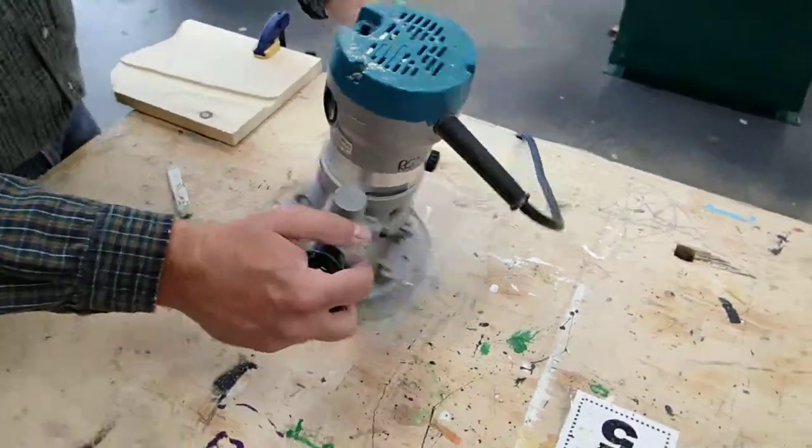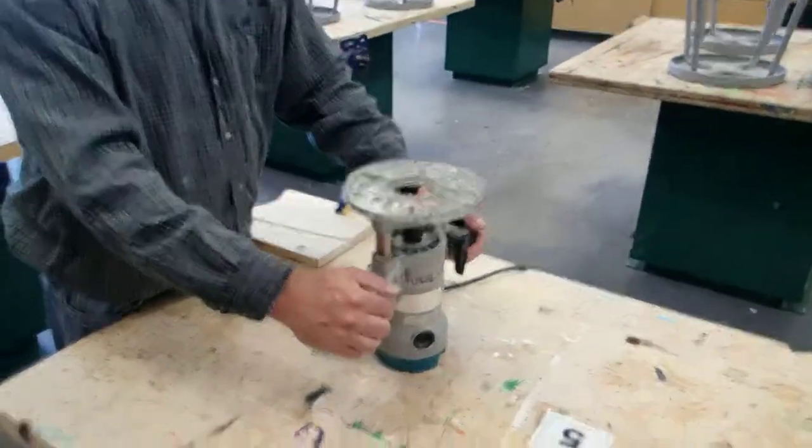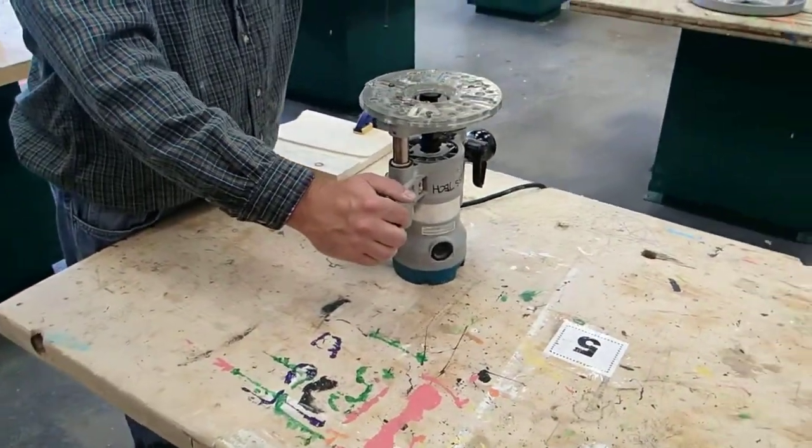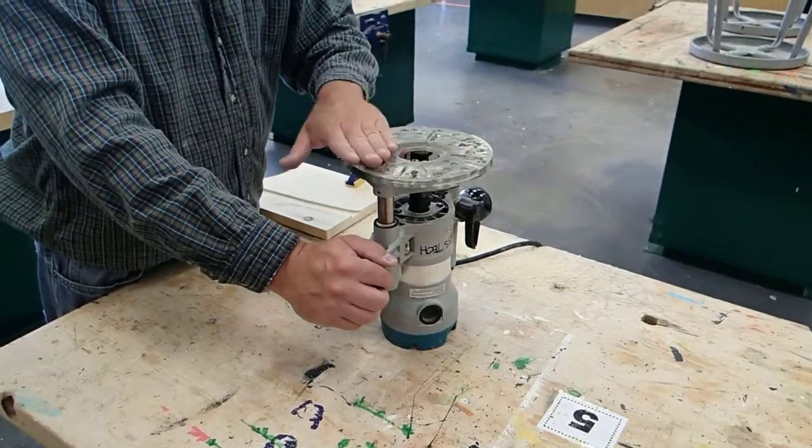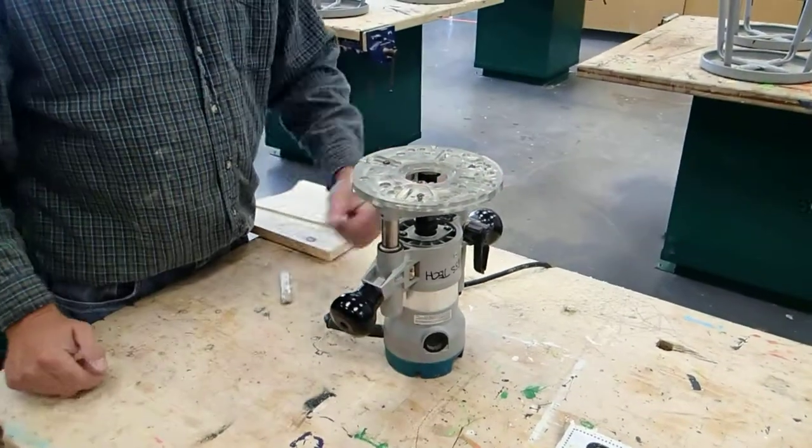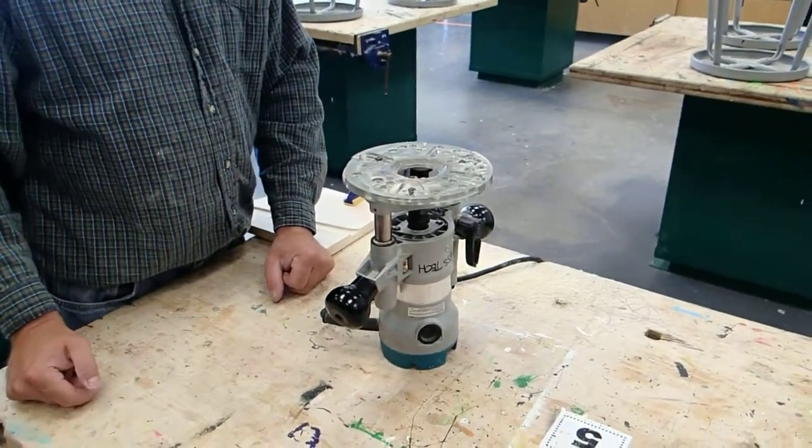And like I said, you can put any router bit that you want. It can be a one-eighth inch radius to a three-quarter inch Ogee, or whatever you want to put on to do trim. But that's the router, the handheld router.